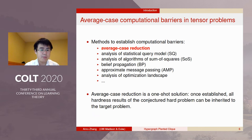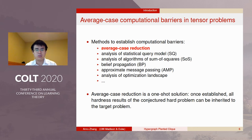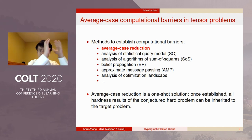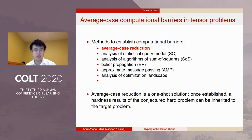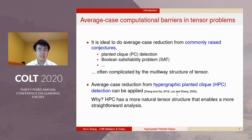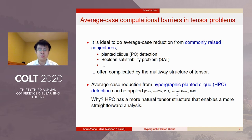There have been many ways to justify computational barriers. Among these options, average case reduction provides a one-shot solution. Once it is established, all the computational hardness results of the conjectured hard problem can be inherited to the target. To do average case reduction, it would be ideal to start with commonly raised conjectures, such as planted clique detection.